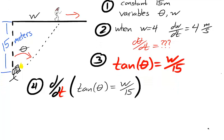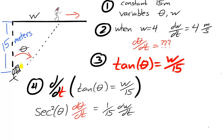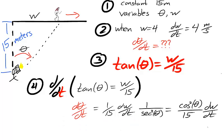Four, we differentiate with respect to t. We're searching for d theta dt, so we'll send secant squared theta to the other side. And because 1 over secant is cosine, we find that d theta dt is cosine squared theta over 15 times dw dt.